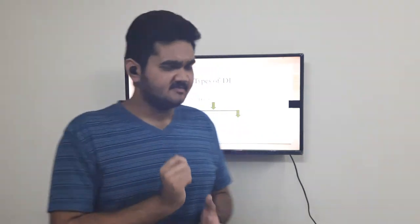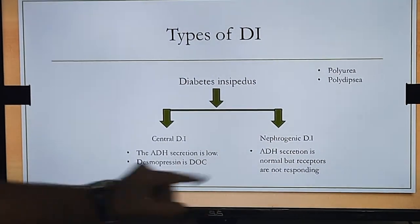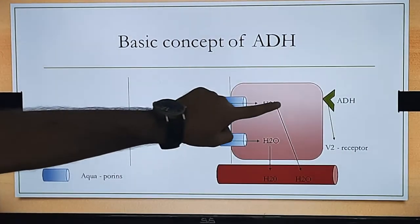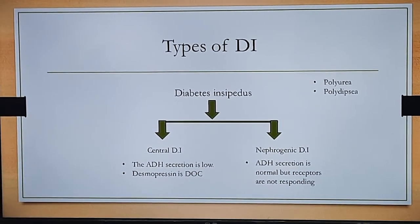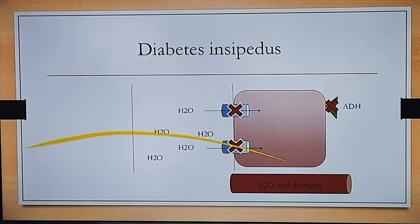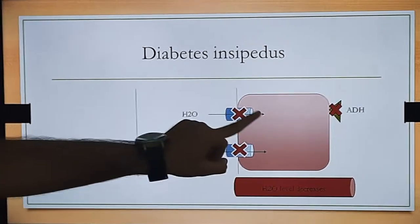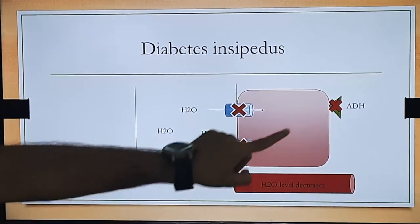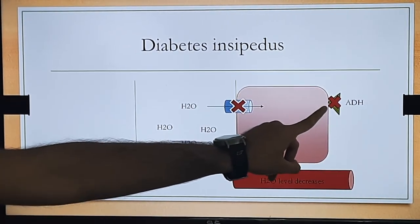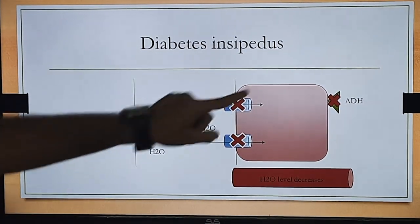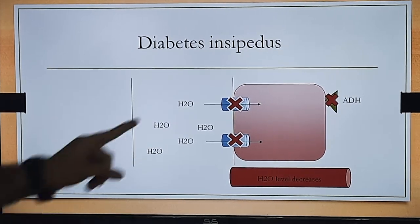In nephrogenic diabetes insipidus, ADH secretion from the brain is normal, but the ADH receptors are not responding. Since the V2 receptor does not respond to ADH, there is no stimulation of the receptor, and therefore no production of aquaporin channels.